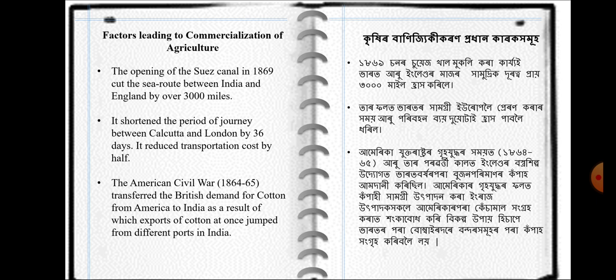The first factor leading to commercialization of agriculture was the opening of the Suez Canal in 1869. The opening of the Suez Canal cut the sea route between India and England by over 3,000 miles, lessening the distance between the colony and the colonial power. It further shortened the period of journey between Calcutta and London by 36 days, and reduced transportation cost by half.